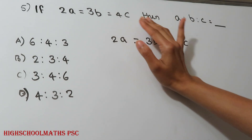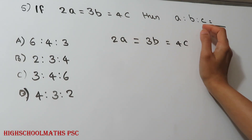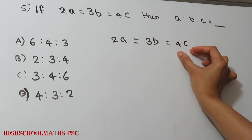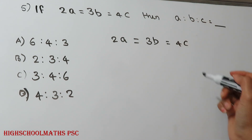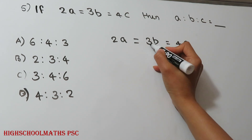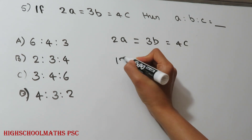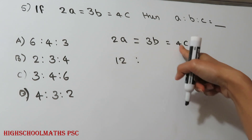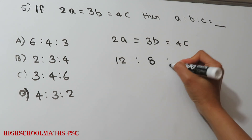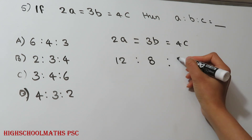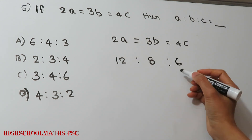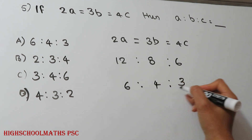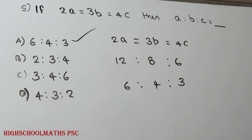If 2a equals 3b equals 4c, then find the relationship between a, b, and c. Setting 2a equal to 3b equal to 4c, we divide to find the ratios. So if you divide through, you get 4c equal to 3c equal to b. The ratio relationship is established.